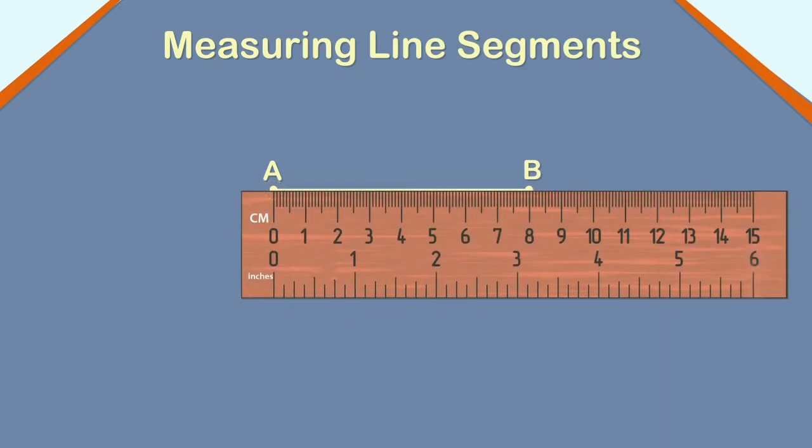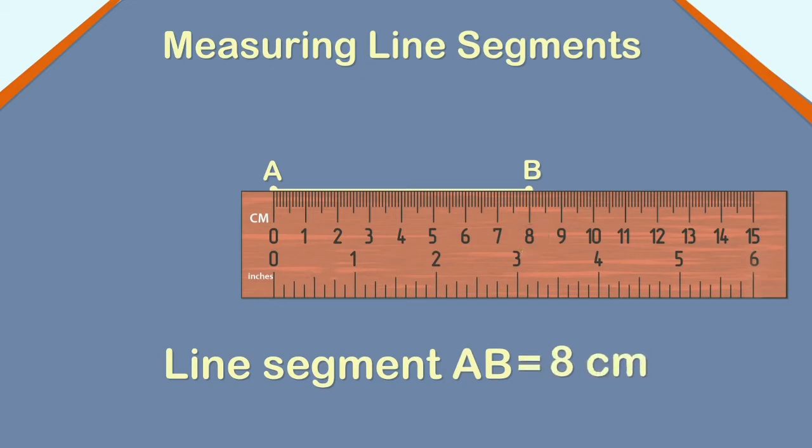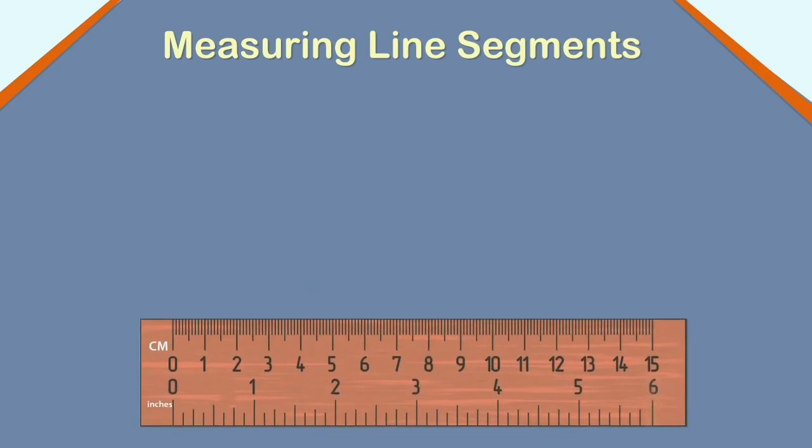The marking on the ruler at which the line ends, that is the marking at point B, gives us the measure of the line segment. Here, the line segment AB measures 8 centimeters. We can even measure a line segment using a divider.